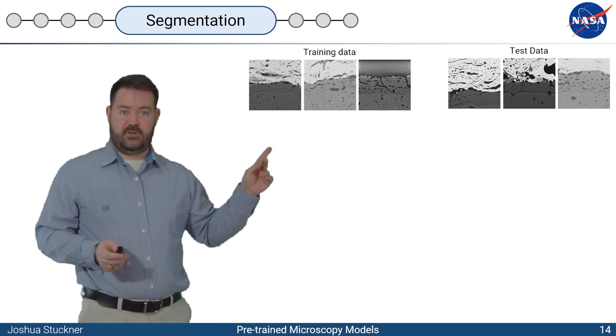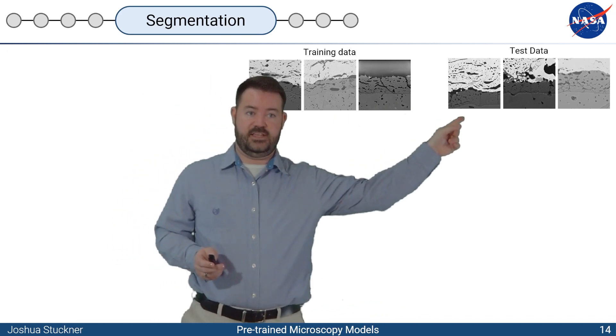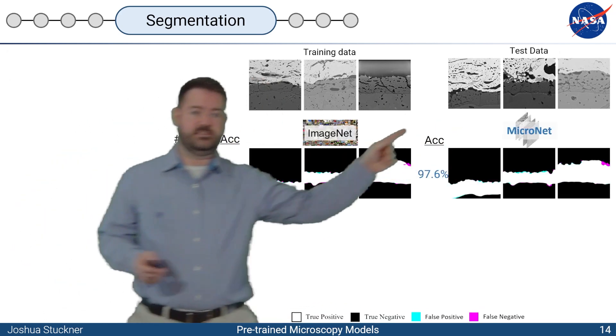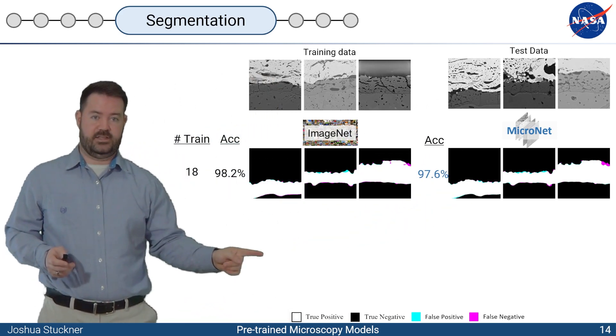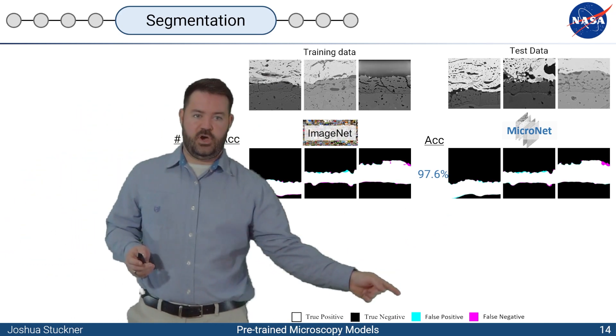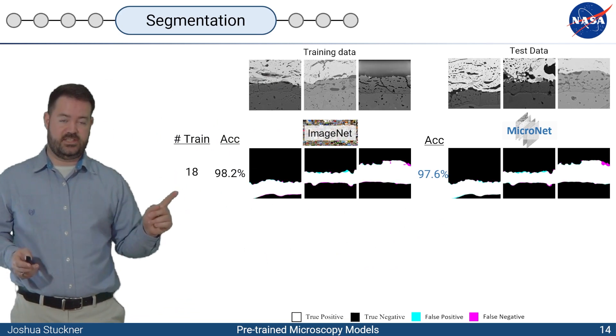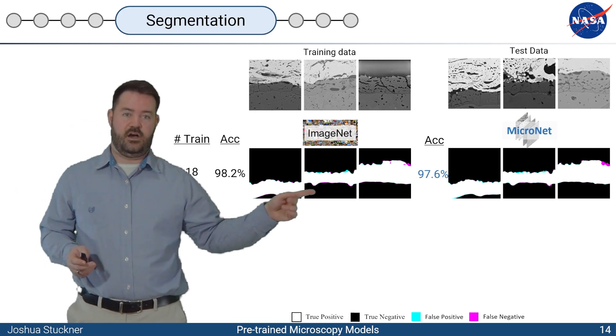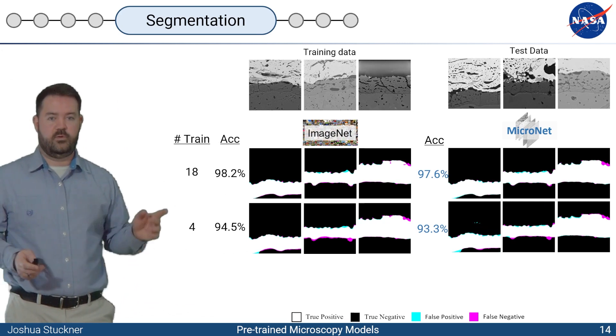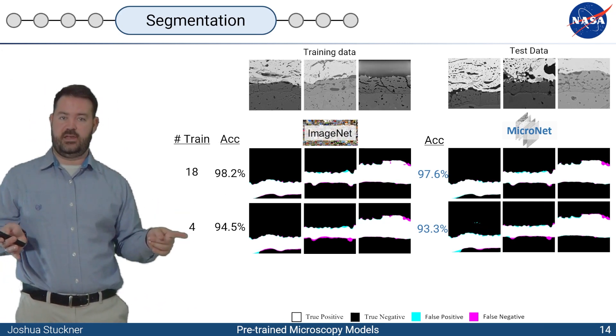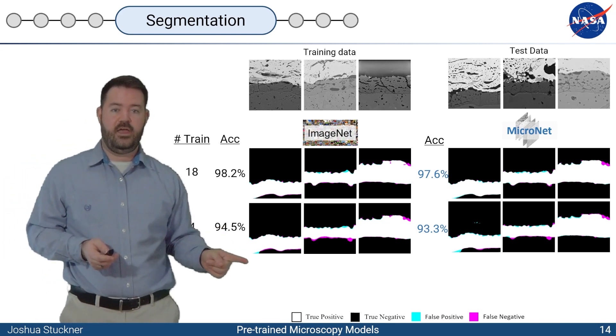So here are the results for the environmental barrier coating. This was the training data or three of the images from the training set. And here is the test set. And what you want to see is black and white. Those are the true positive and true negative. And you don't want to see blue or pink, which is the false positive and false negative. When we have 18 training sets, we get pretty accurate results. You can do size analysis on this. It was pretty equal on both ImageNet and Micronet. When we go down to four images, we have a slight reduction of accuracy. But that's to be expected.